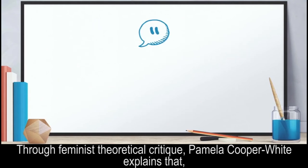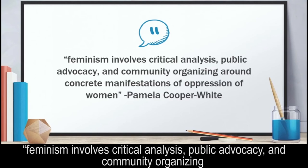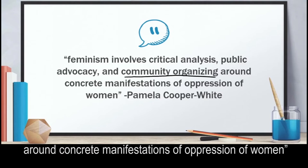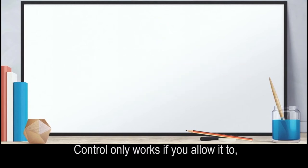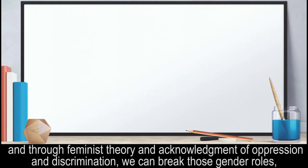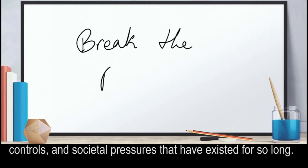Through feminist theoretical critique, Pamela Cooper White explains that feminism involves critical analysis, public advocacy, and community organizing around concrete manifestations of oppression of women. Control only works if you allow it to, and through feminist theory and acknowledgement of oppression and discrimination, we can break those gender roles, controls, and societal pressures that have existed for so long.